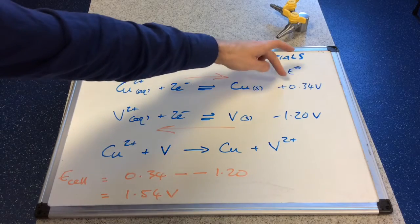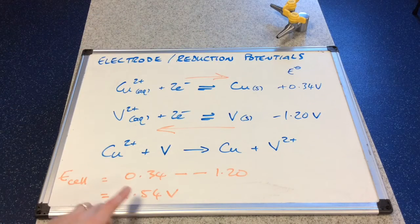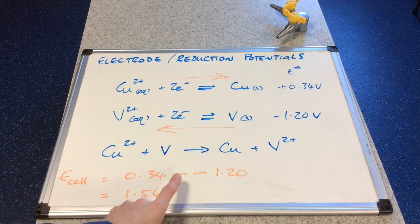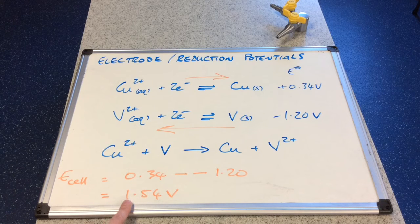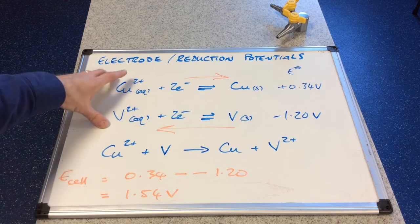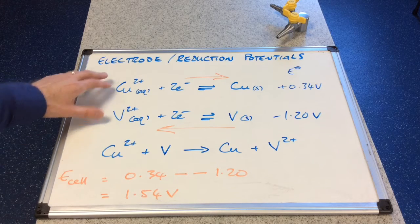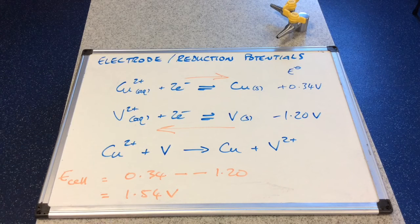Sometimes that might just be less positive than that one. But in this case we've got 0.34 minus minus 1.2. And therefore we get a voltage in this, between these two, of 1.54 volts.